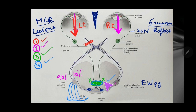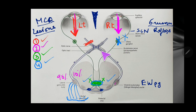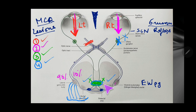Consider the Edinger-Westphal nuclei to be normal now. Condition five: if there is injury to the ciliary ganglion or the post-ganglionic fibers on the right side, and you point a torch in the right eye, there will be no constriction on the right side because impulses cannot proceed beyond the injured ciliary ganglion. However, if you point the torch in the left eye, there will be constriction of the left eye since that pathway is intact.